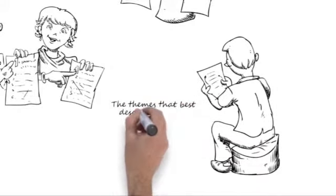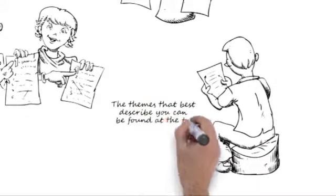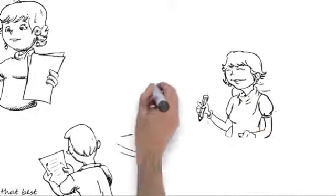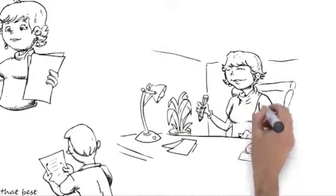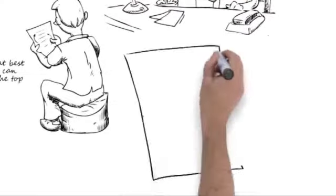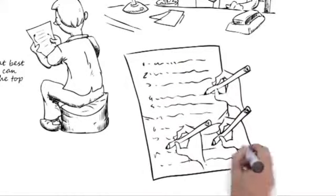The themes that best describe who you naturally are can be found at the top of your report. Grab a pen. Read the definition of each theme, starting with the first one. As you read each description, ask yourself, is this always me?